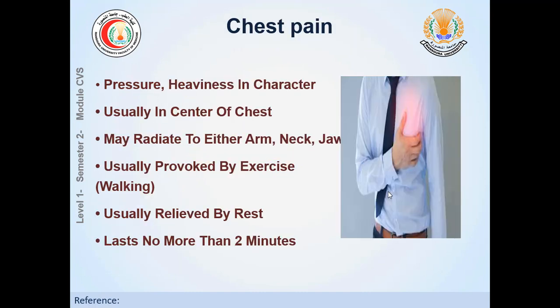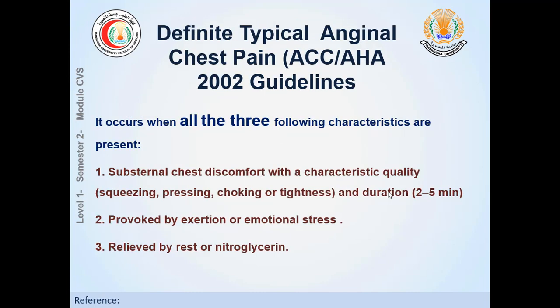Chest pain: what are the criteria of cardiac chest pain? Chest pain due to a heart attack or ischemic heart disease usually has a pressure or heaviness character. The patient describes it as pressure in the center of the chest, at the sternum. It may or may not radiate to the arm, neck, or usually the left shoulder. It is typically increased by exercise and relieved within two minutes — this is angina. A heart attack, however, lasts more than 10 minutes. There are three criteria that must all be present for typical chest pain according to the guidelines.